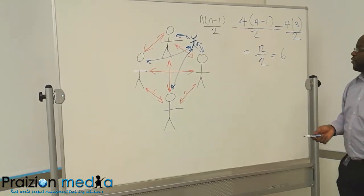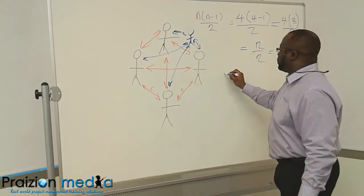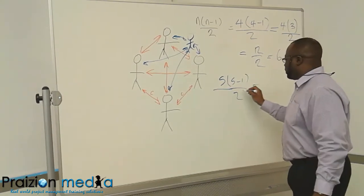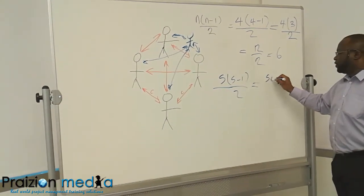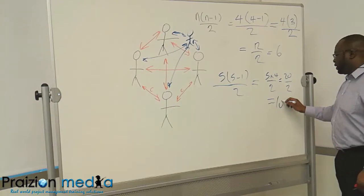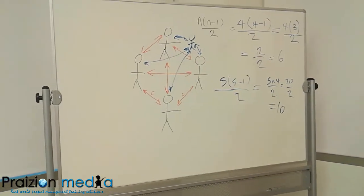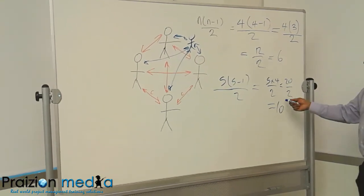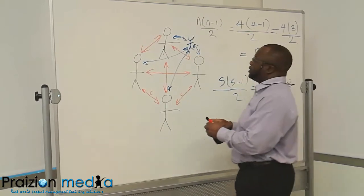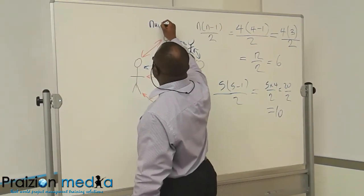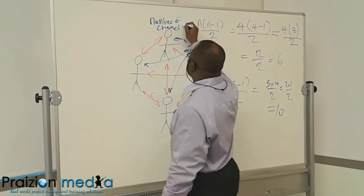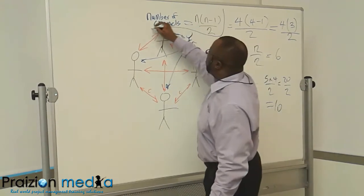So if you've got 5 people, you've got 5 times 5 minus 1 divided by 2, and that's going to be 5 times 4 divided by 2, which is 20 divided by 2, which is 10. 10 channels of communication. So this is the number of channels and the N is the number of people. So the formula could actually say number of channels is equal to this.